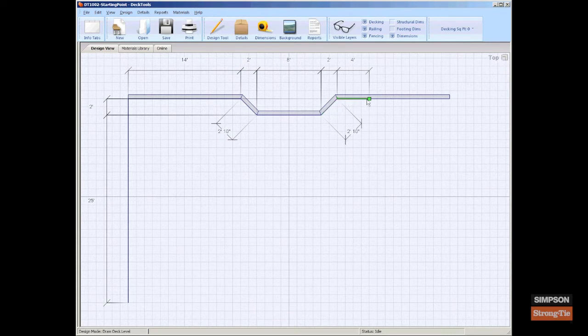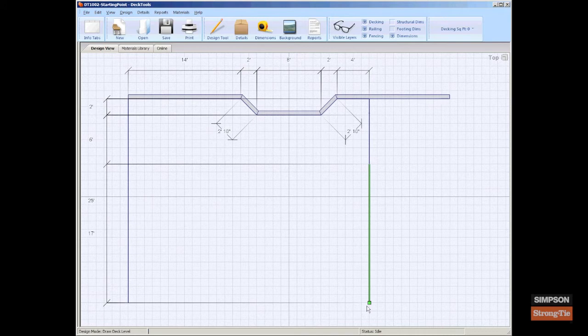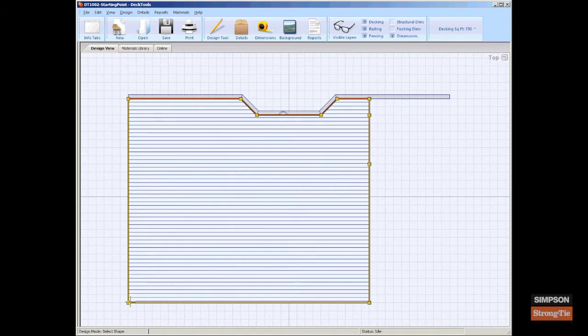If you know where you plan to place the stairs for the deck, you can add a point at this time. Otherwise, you can add the point later. Complete the deck level by pressing escape or by clicking the start point again. Both options automatically generate the substructure of the deck level.